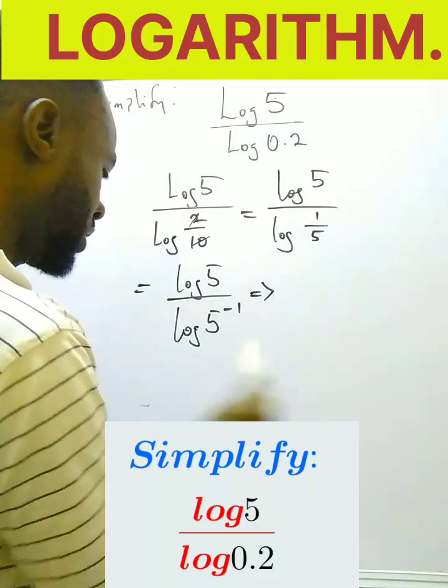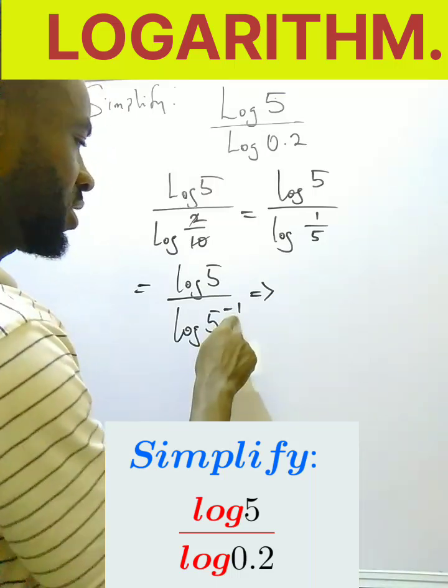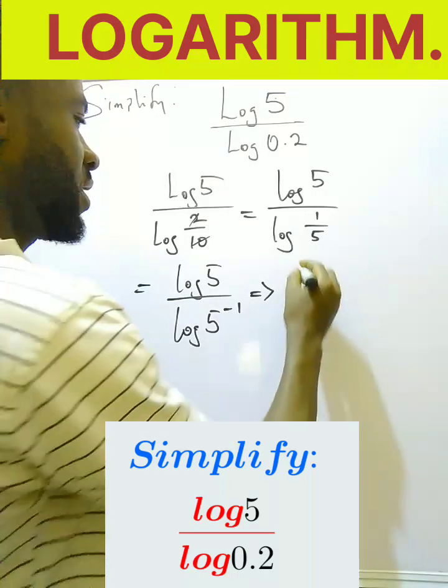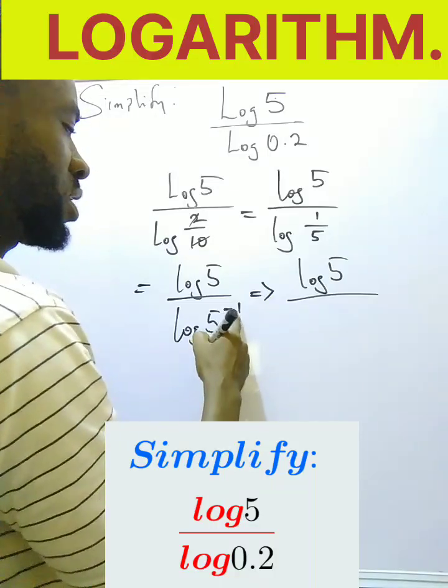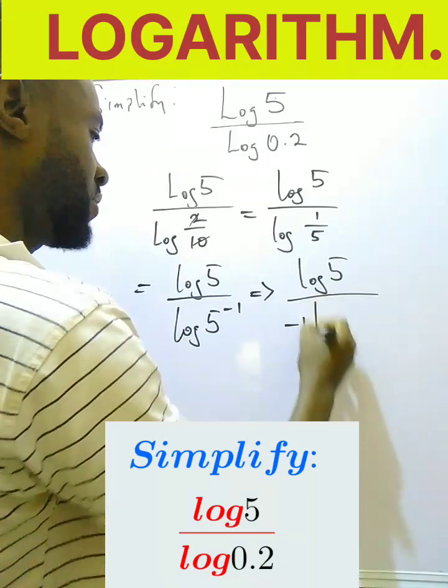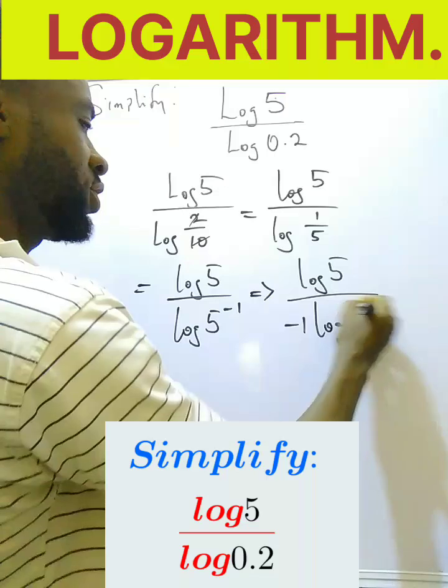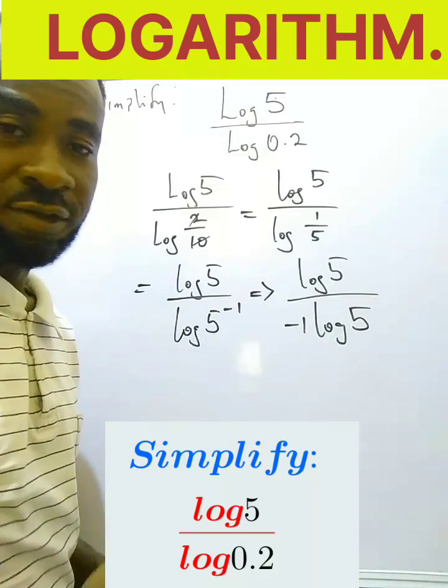So this power here, this minus 1, will also come to the front. Remember, if it comes to the front it means multiplication, so I've applied the power law of logarithm there.